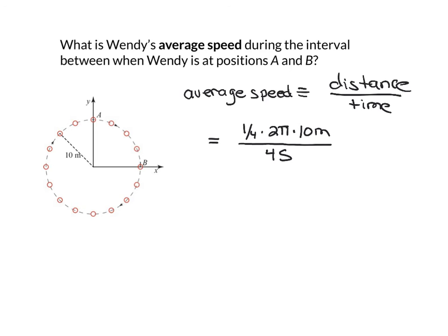So we're just about done. I just have to do some simple math. A quarter times 2 is a half, and then you divide a half by 4 and you get an eighth. And then you multiply an eighth by 10 and you get 1.25. And then there's a factor of pi meters per second. So her speed is just a scalar quantity, and her average speed is 1.25 times pi meters per second.